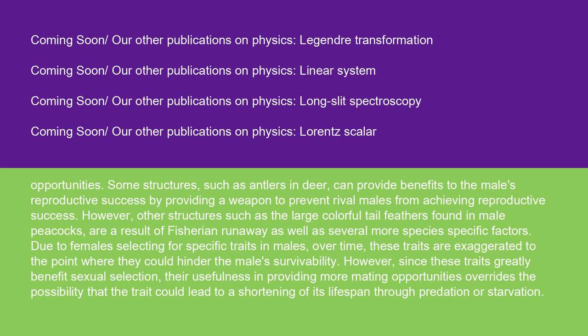Some secondary sex characteristics are not only meant for attracting mates, but also for competing with other males for copulation opportunities. Some structures, such as antlers in deer, can provide benefits to the male's reproductive success by providing a weapon to prevent rival males from achieving reproductive success. However, other structures such as the large colorful tail feathers found in male peacocks are a result of Fisherian runaway, as well as several more species-specific factors. Due to females selecting for specific traits in males, over time these traits are exaggerated to the point where they could hinder the male's survivability. However, since these traits greatly benefit sexual selection, their usefulness in providing more mating opportunities overrides the possibility that the trait could lead to a shortening of its lifespan through predation or starvation.